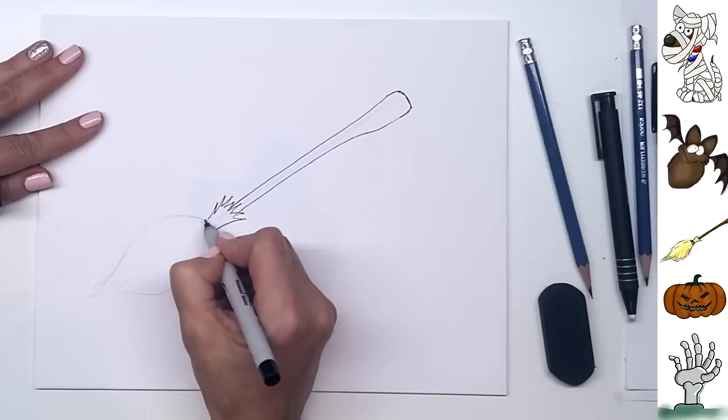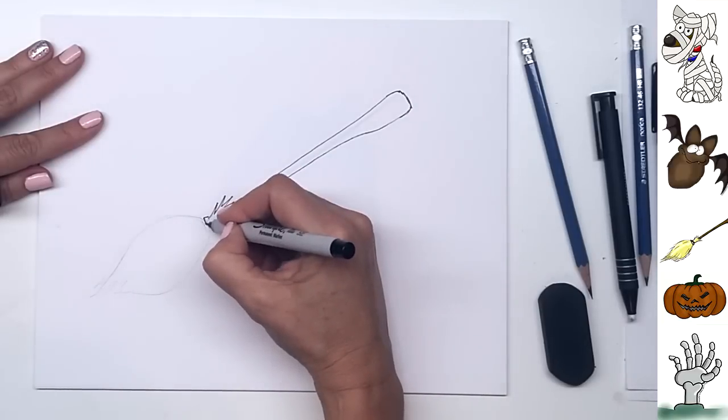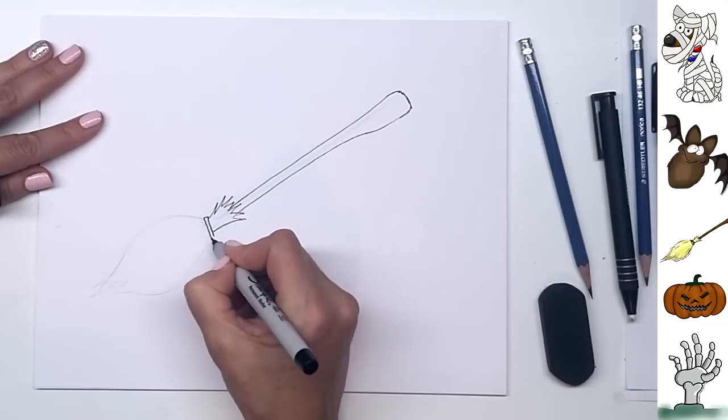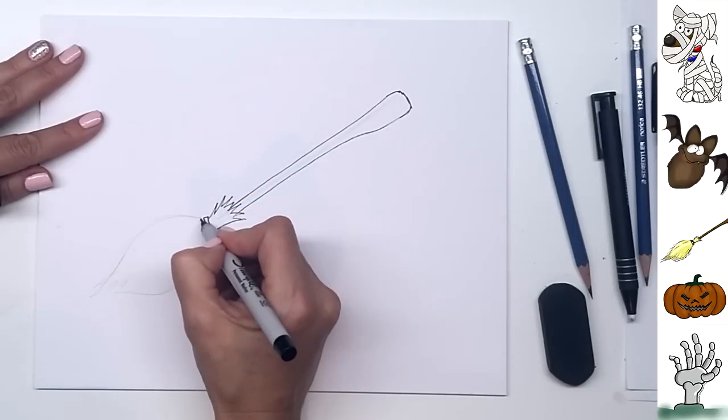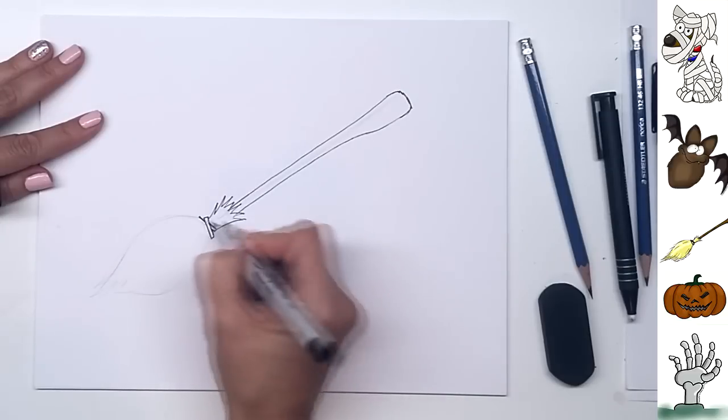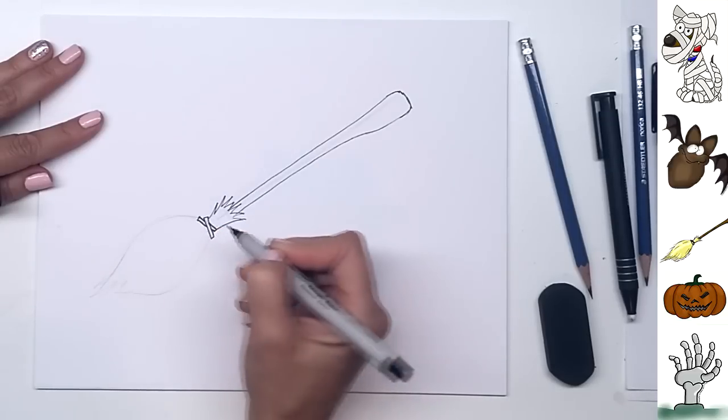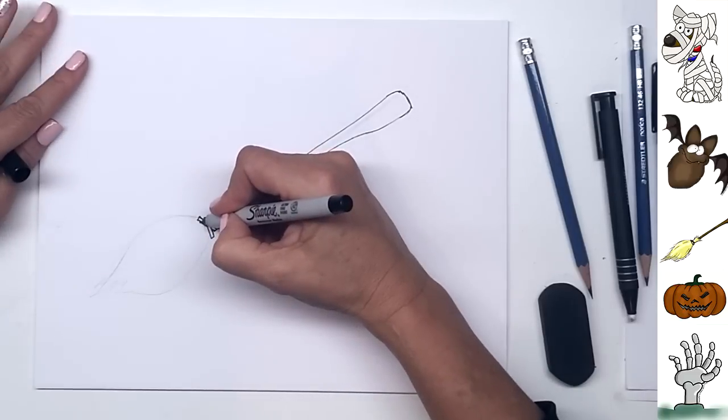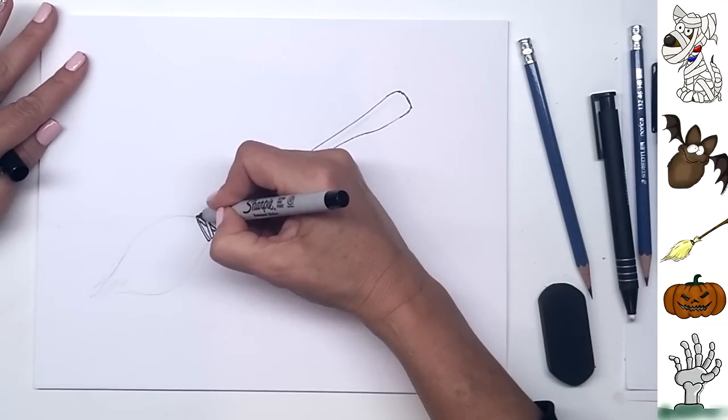And then we're going to draw the string that holds it together. So I'm just going to make the edge of the string and then a double line like this coming across. And then another one that's going to cross underneath. So I'm just going to go behind like this and make it a double line also. And then maybe just one more to connect this all together like that.